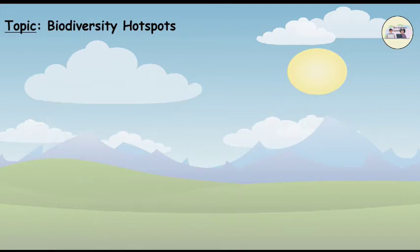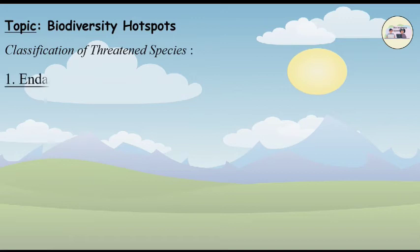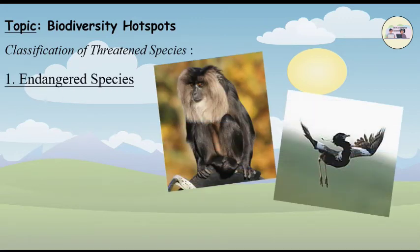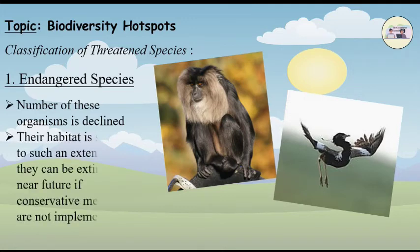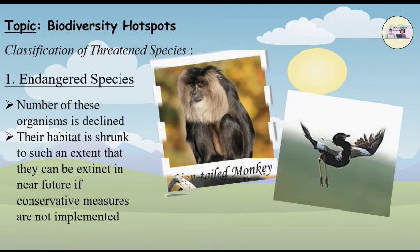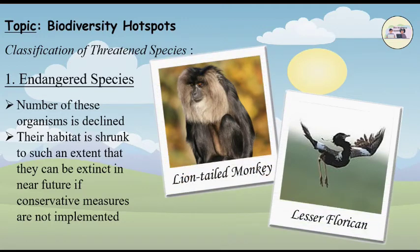Classification of threatened species. 1. Endangered species: Either the number of these organisms has declined or their habitat is threatened to such an extent that they could become extinct in the near future if conservation measures are not implemented. Example: Lion-tailed monkey.